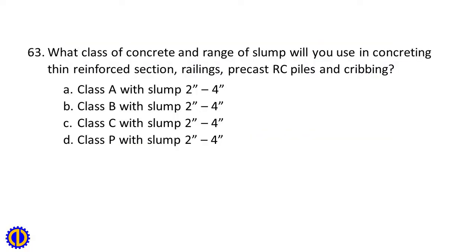Question 63. What class of concrete and range of slump will you use in concreting thin reinforced sections, railings, precast RC piles, and cribbing? A. Class A with slump 2-4 inches, B. Class B with slump 2-4 inches, C. Class C with slump 2-4 inches, D. Class P with slump 2-4 inches.